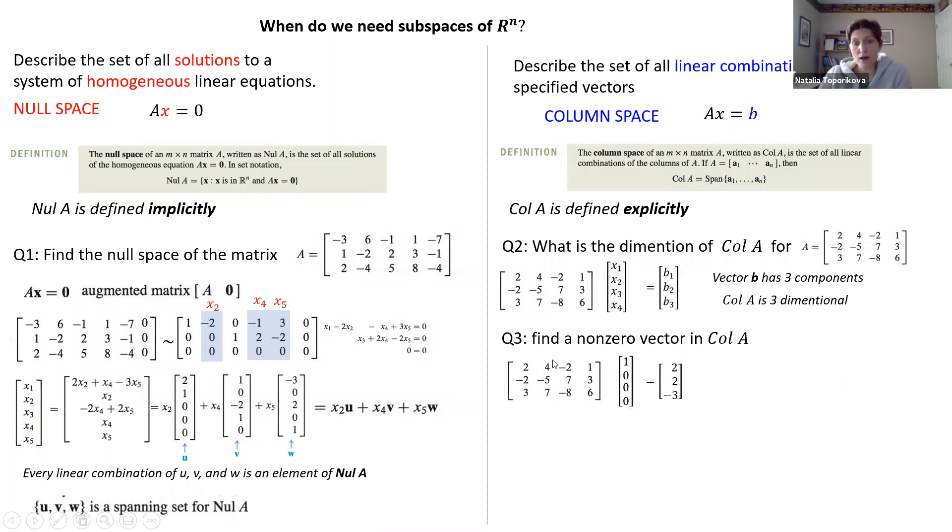Then by performing matrix multiplication, we can find one of the column space vectors 2, minus 2, 3, which happens to be the first column of our matrix A, which is probably not surprising. You can take any column and it will belong to the column space. But here, I'm just telling you why it is.